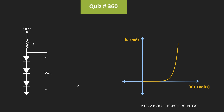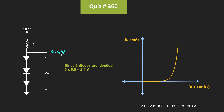Now here, with a 0.7V voltage drop, this output voltage will be equal to 2.1V. But we have been given that the required output voltage is equal to 2.4V. And to get that, the forward voltage drop across each diode should be equal to 0.8V.